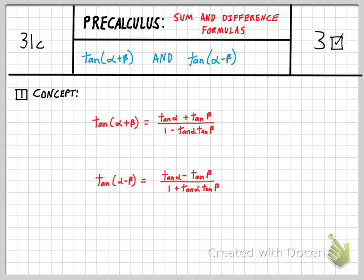This is pre-calculus concept 31C. Our final two sum and difference formulas are for tangents. So down here we have tangent of alpha plus beta and tangent of alpha minus beta. These are two more formulas you want to add to your toolkit and be able to use and recognize.